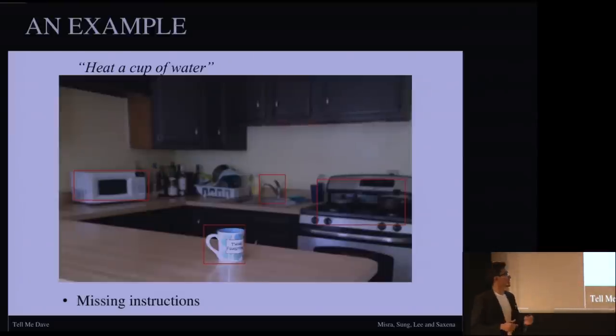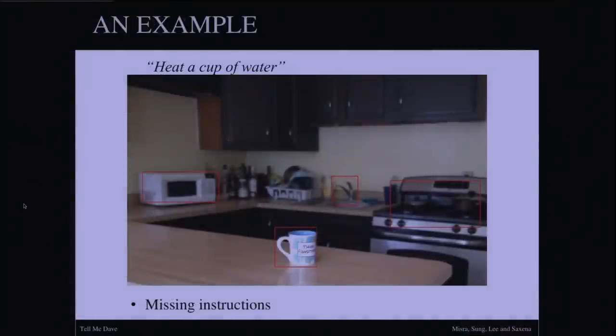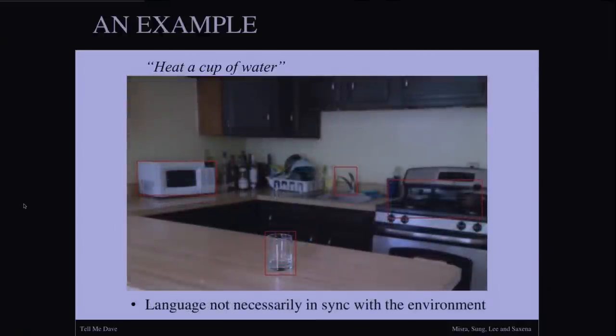Consider this environment. It has a cup, a microwave and a stove in the background and a sink. Well, if the cup has water, then you can heat it in one of the multiple ways. But it will also be the case that the cup is empty, in which case the description does not specify that you have to fill the cup with water. And this missing instruction, which is fairly common in real language data, needs to be handled. Another type of challenge that arises is where the language is not necessarily consistent with the environment.